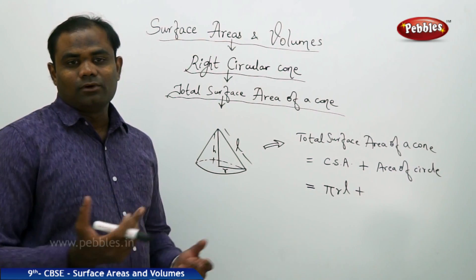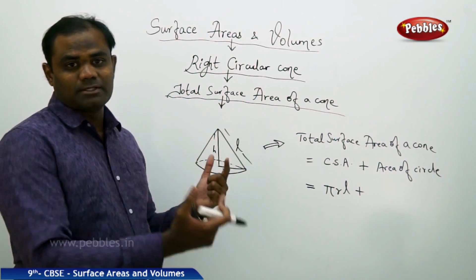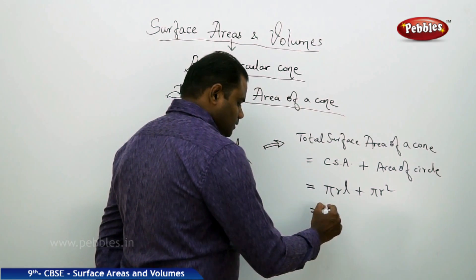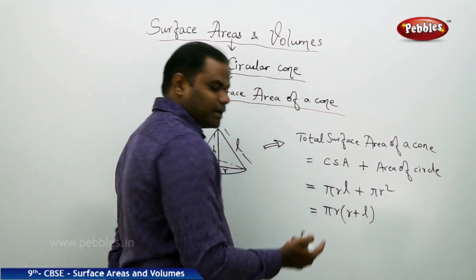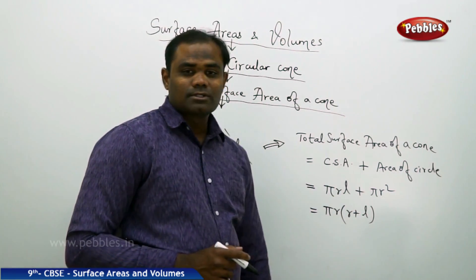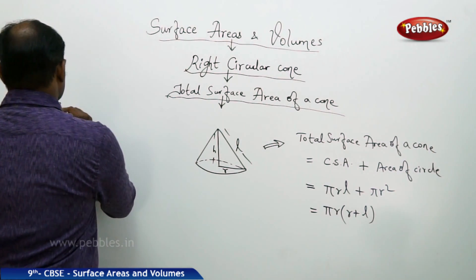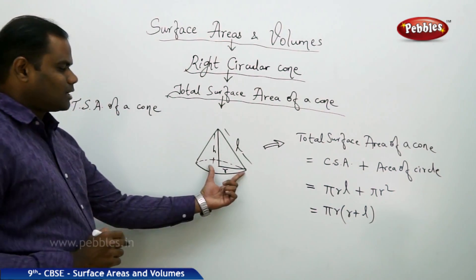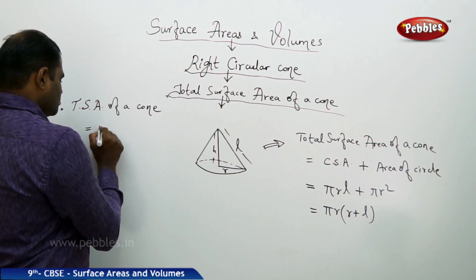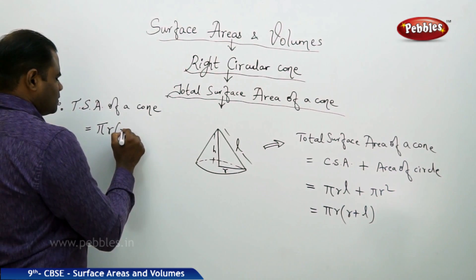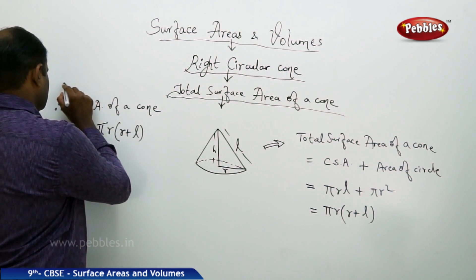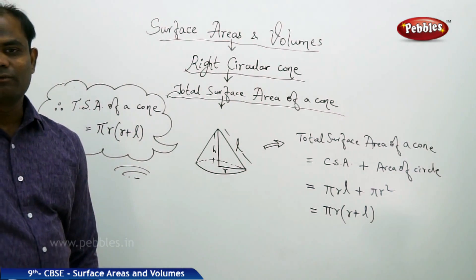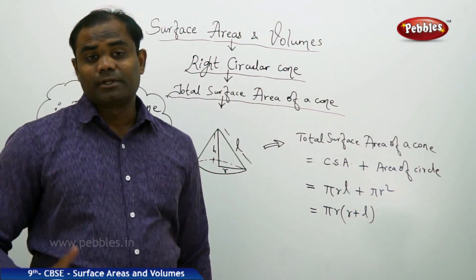The area of a circle is πR². Taking πR common, we can re-write this as πR(R + L). That is how we get the total surface area of a cone. Therefore, the total surface area of a cone with radius R and slant height L is πR(R + L) square units.